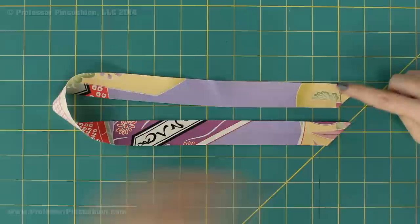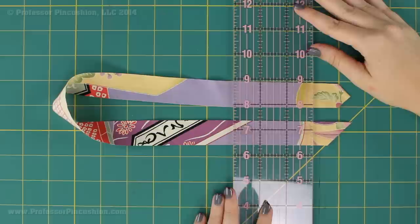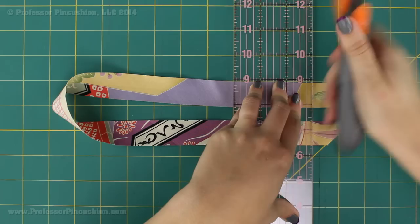If your strips end up with points like this, you can cut off the points and square the edges because we want a nice flat end.